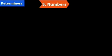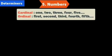Next one is numbers. Let's see how determiners are indicated in numbers. We have cardinal and ordinal. Cardinal: one, two, three, four, five. Ordinal: first, second, third, fourth, fifth. It is rather easy to remember.